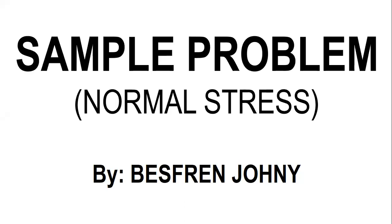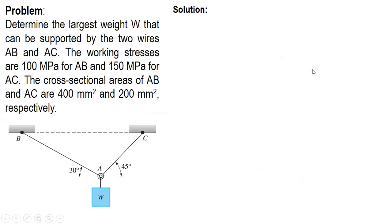In this video I'm going to solve a problem on normal stress. The problem: determine the largest weight W that can be supported by the two wires EB and EC. The working stresses are 100 MPa for EB and 150 MPa for EC. The cross-sectional areas of EB and EC are 400 mm² and 200 mm² respectively.